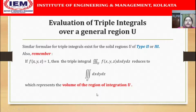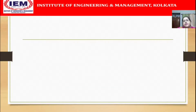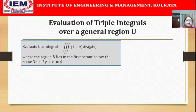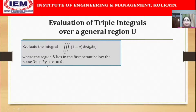With this knowledge, let us move on to see some problems on how to evaluate triple integrals over such general regions. The first problem is: evaluate the triple integral of (1 minus x) dx dy dz over U, where the region U lies in the first octant below the plane 3x + 2y + z = 6.